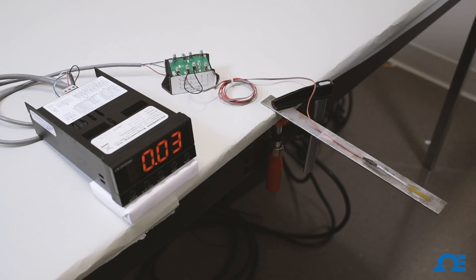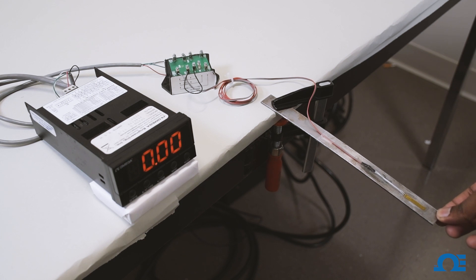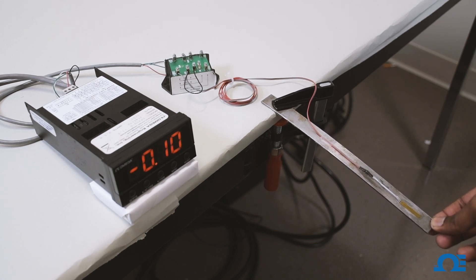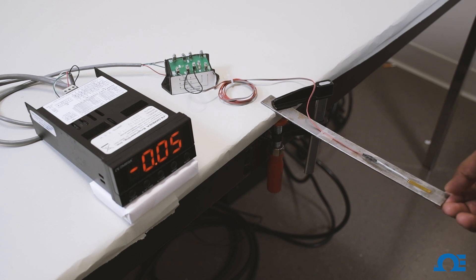We've clamped the stainless steel flat to the table, and now when I bend the stainless steel flat, you can actually see strain being applied and being displayed on the DP25B-S meter.